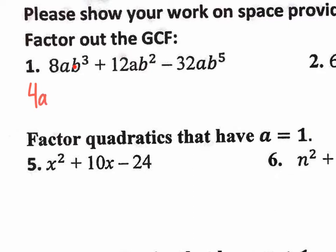We also have Bs: B to the third, B to the second, and B to the fifth. So if you have 3, 2, and 5 here, what's the maximum amount of Bs you could pull out of all the terms at the same time? That would be 2. If you have 3 Bs here, you could pull out 3 Bs, but you can't pull out 3 Bs from a term that only has 2. The greatest amount of Bs you could pull out of all terms at the same time is B to the second.